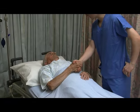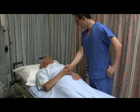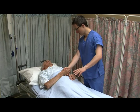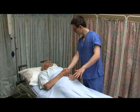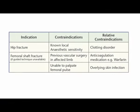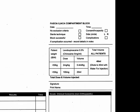First of all, explain the procedure to the patient and obtain verbal consent. Be aware of the procedure contraindications as listed in the table. Document verbal consent on the emergency department hip fracture pro forma.